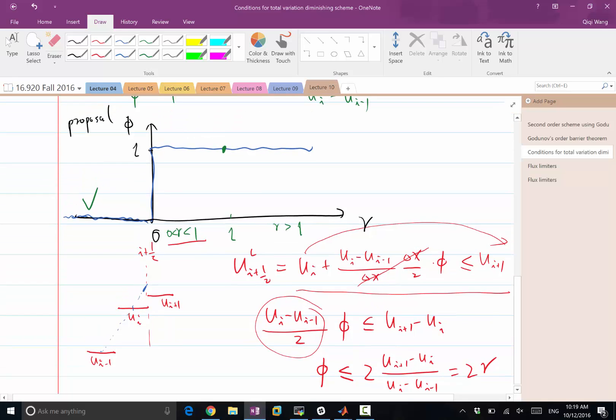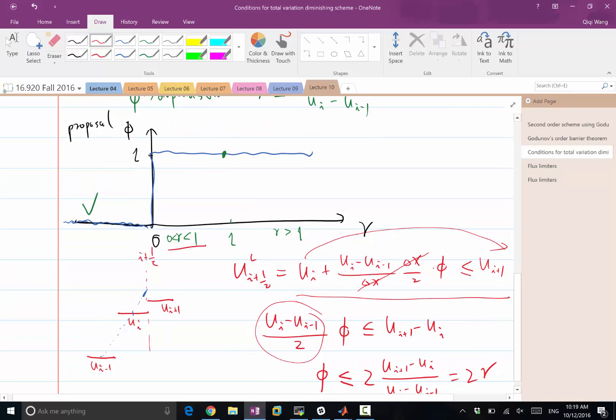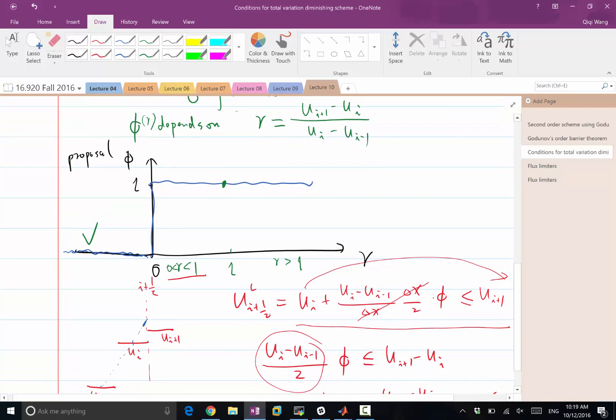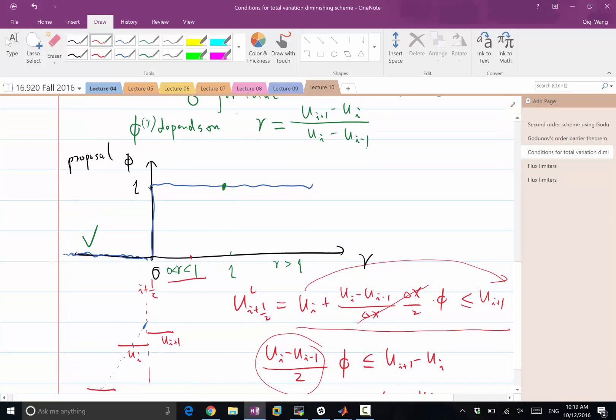So, φ has to be less than 2r in this range. If I draw it, if this is half, 2r at r equal to half is equal to 1. And this is the upper limit for what φ could be within this range. All right? Does it make sense? Okay, so this part doesn't work. This part could still work, right, in your proposal.